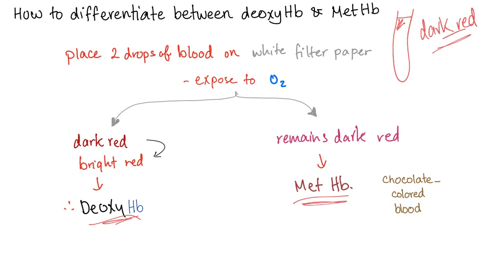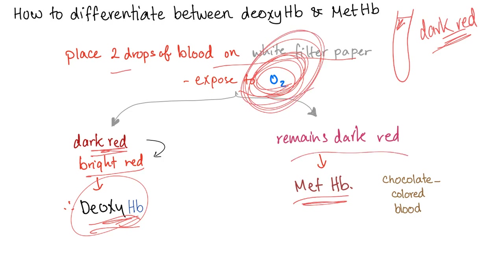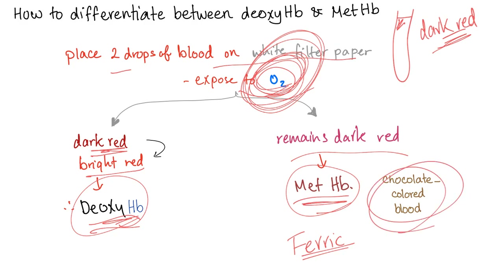Two drops of blood on white filter paper exposed to oxygen: if the dark red color turns bright red, you have deoxyhemoglobin, because the hemoglobin is functional and can bind oxygen as Fe2 binds O2. If the blood remains dark red, this is methemoglobin — it's ferric and cannot bind oxygen — that's why we call it chocolate-colored blood.